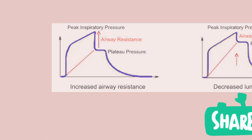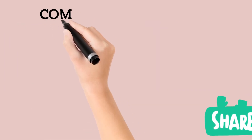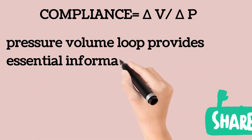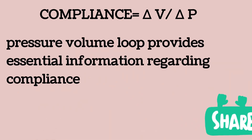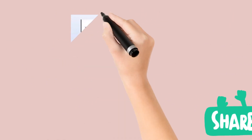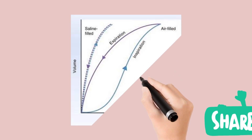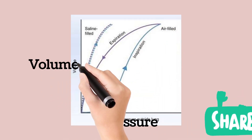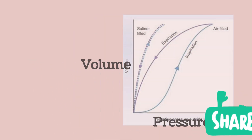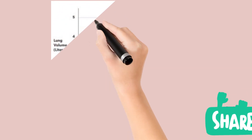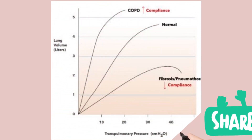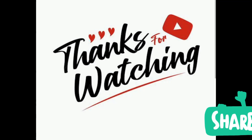Since compliance is determined by volume change divided by pressure change, the PV loop — or pressure-volume loop — provides useful information on the characteristics of a patient's compliance. A shift of the slope towards the pressure axis indicates a decrease in compliance, while a shift of the slope towards the volume axis indicates an increase in compliance.